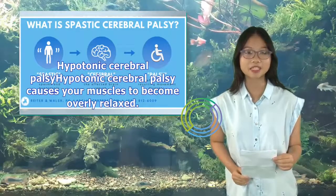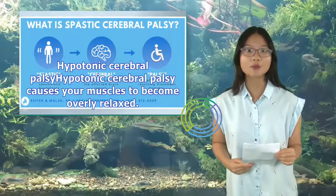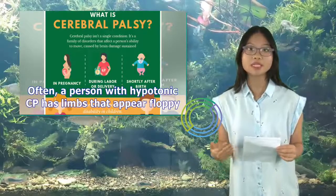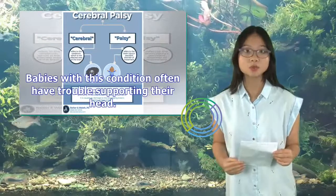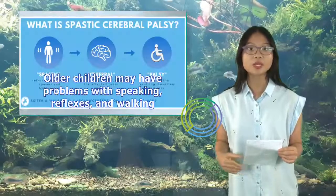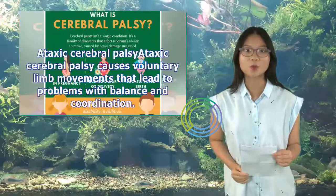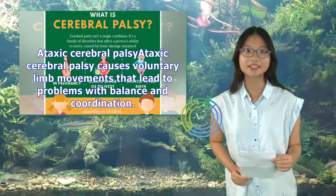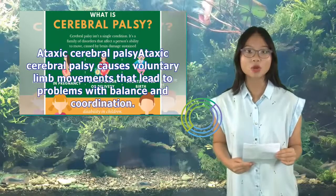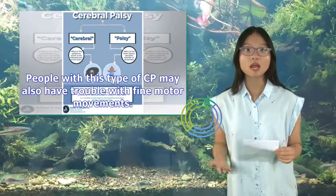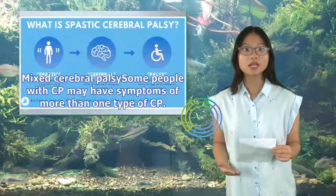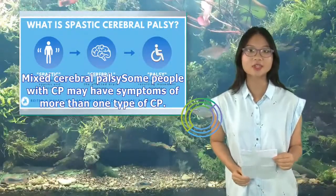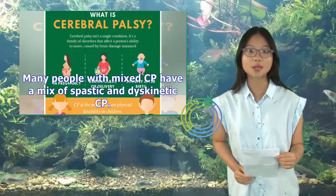Hypotonic cerebral palsy causes muscles to become overly relaxed. A person with hypotonic CP often has limbs that appear floppy, and babies with this condition often have trouble supporting their head. Older children may have problems with speaking, reflexes, and walking. Ataxic cerebral palsy causes voluntary limb movements that lead to problems with balance and coordination; people with this type may also have trouble with fine motor movements. Some people with CP have mixed cerebral palsy, with symptoms from more than one type — many have a mix of spastic and dyskinetic CP.